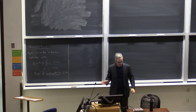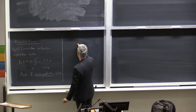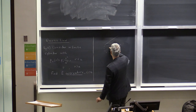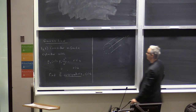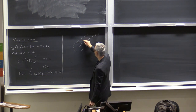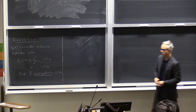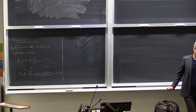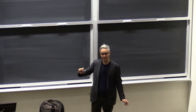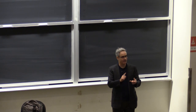Here we have an infinite cylinder. The geometry is like this — the cylinder extends along the z-axis. We're told there is a volume charge density ρ_v inside the cylinder. This is a cylinder of radius a. So we have a problem with cylindrical symmetry. Remember that Gauss's Law is always true; however, it is only useful to calculate fields if you have spherical, cylindrical, or rectangular symmetry.